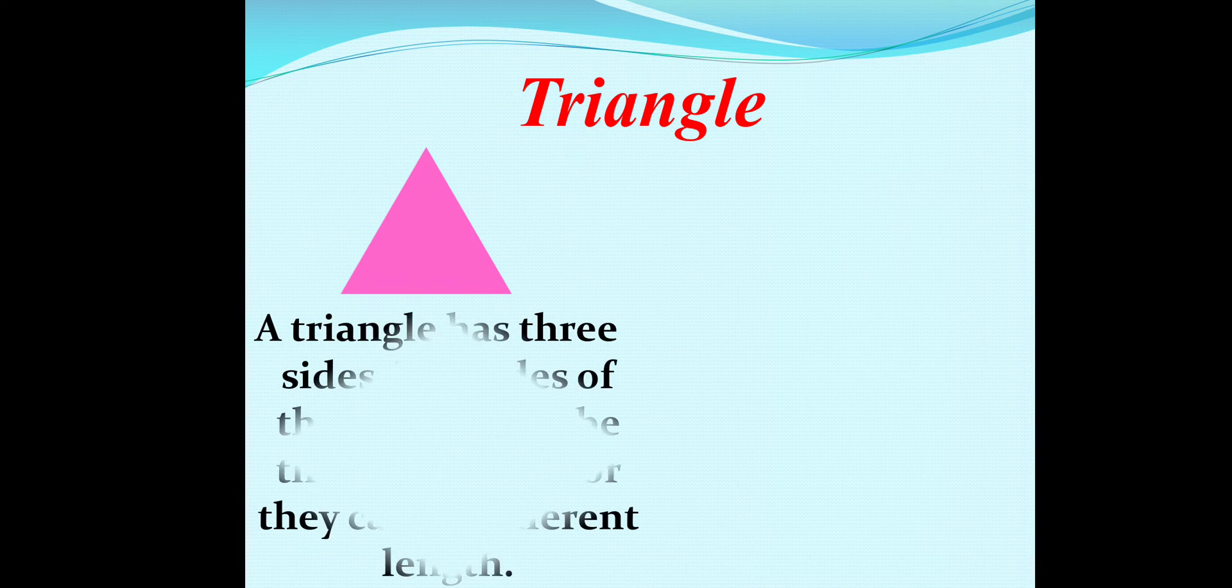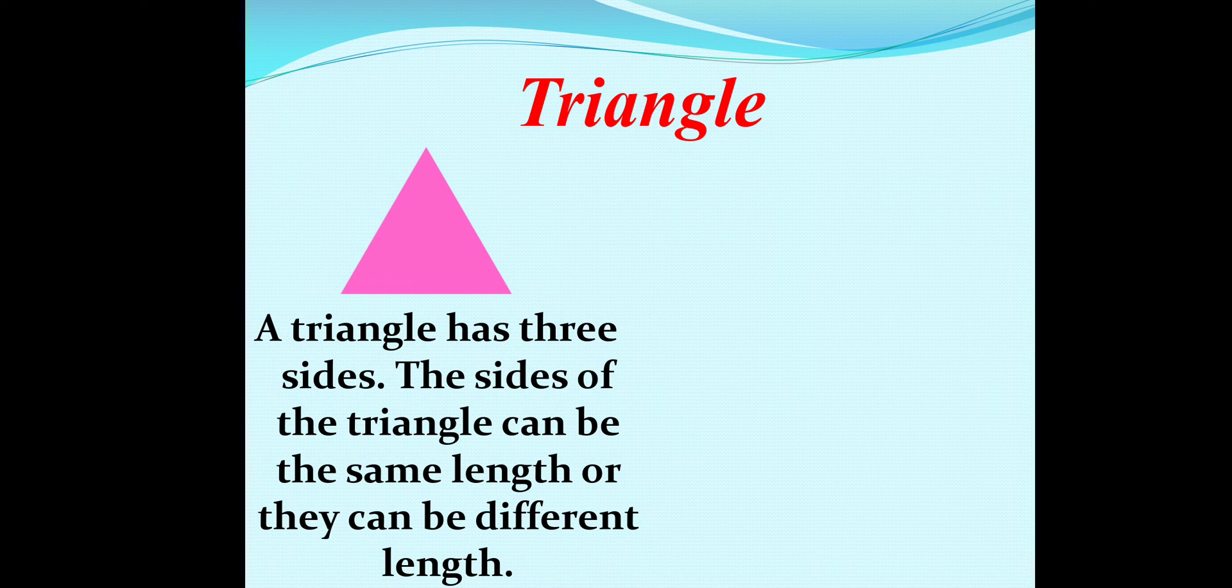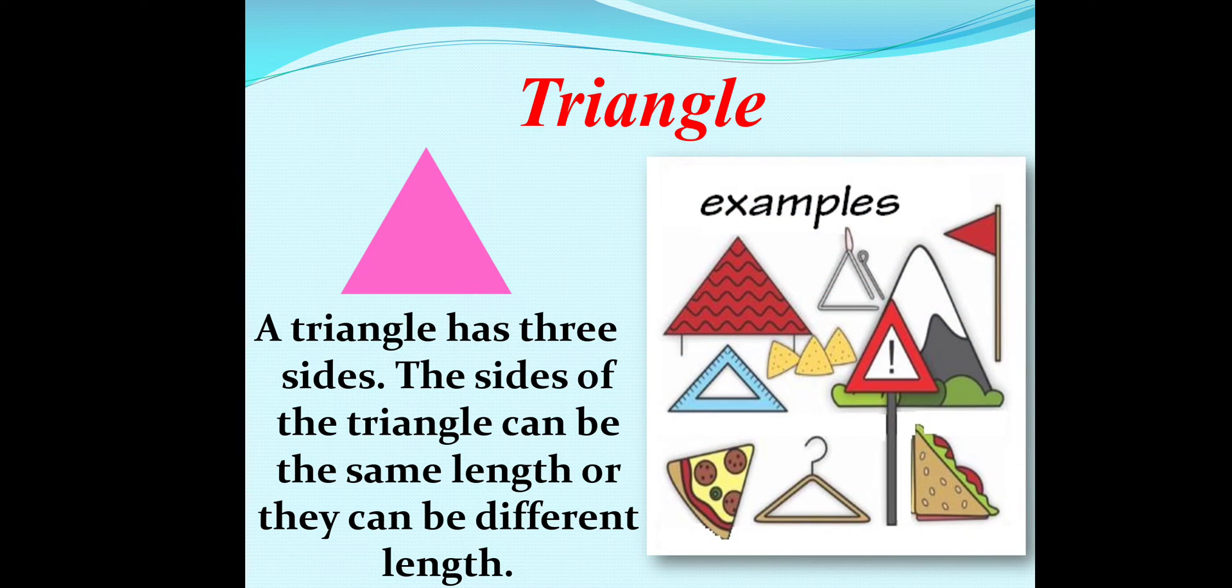Now, we will go for triangle. This shape is called a triangle. A triangle has three sides. The sides of triangle can be the same length or they can be different in length. Here are some examples in this picture: set square, hanger, a piece of pizza, sign board, sandwich, bingo chips, mountain.